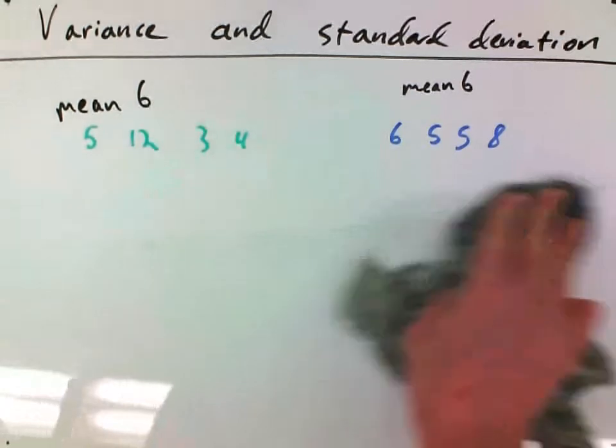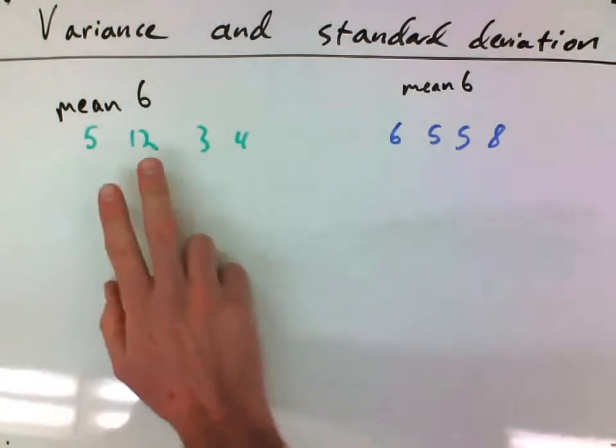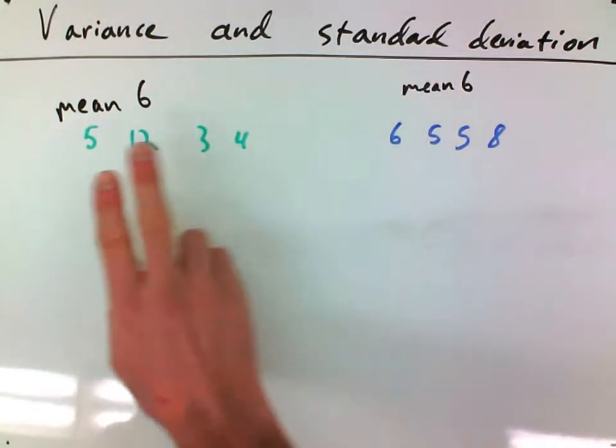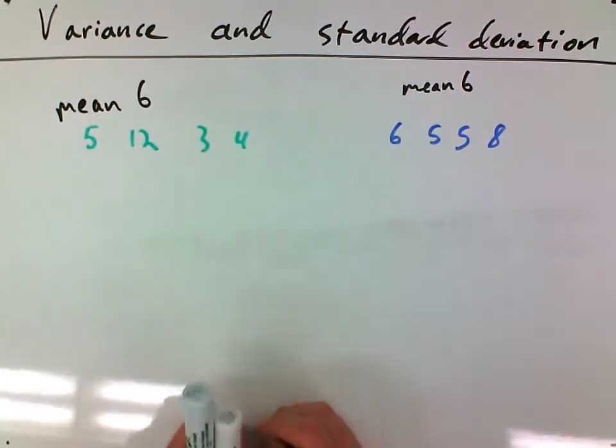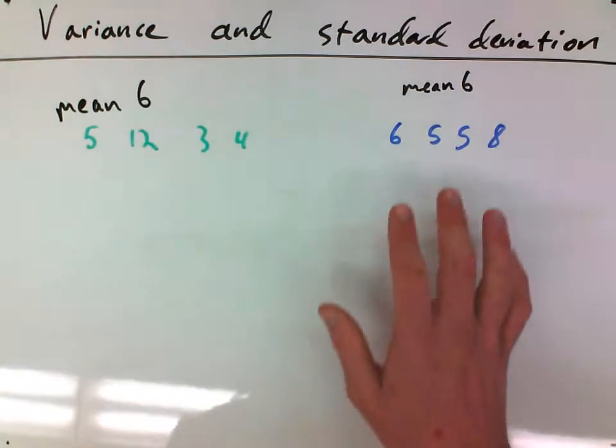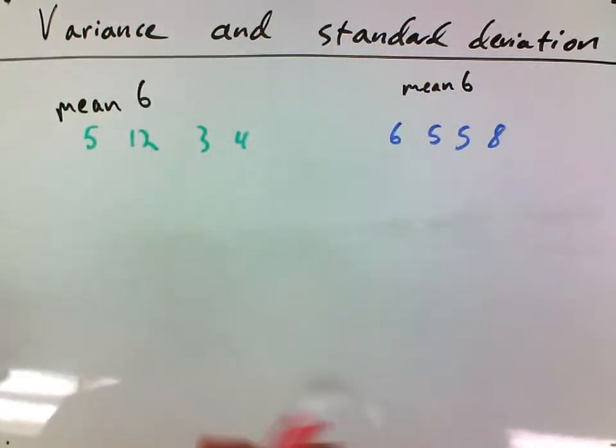That doesn't mean that these two pitchers are the same though, quite far from it. Variance and standard deviation are going to give us another way of comparing these two pitchers, basically how spread out their data is. This guy pitches good sometimes and terrible other times. This guy is more consistent. That's what variance and standard deviation are going to tell us.